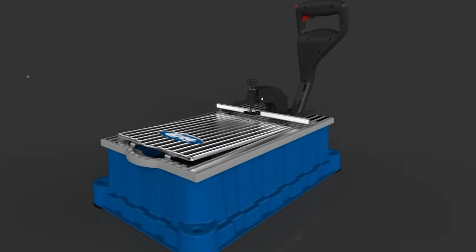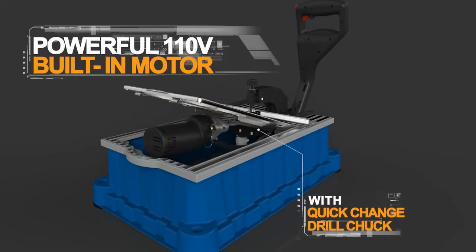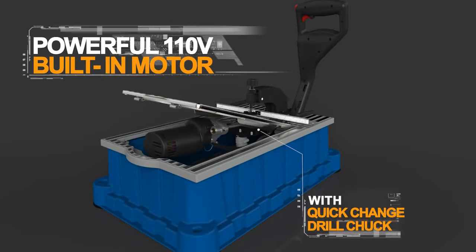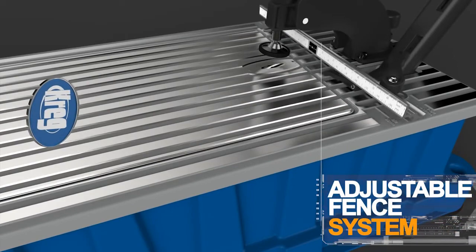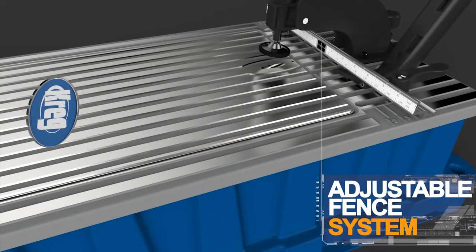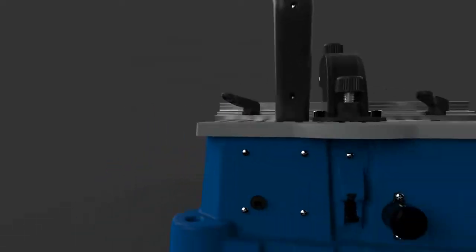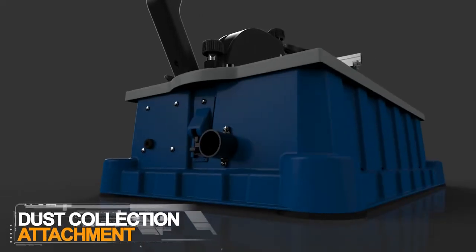The Foreman comes complete with a powerful 110-volt, 5-amp, 2800-rpm electric motor for fast drilling, an adjustable fence with spring-loaded stops to position your workpiece, and a dust collection attachment that keeps your work area clean.